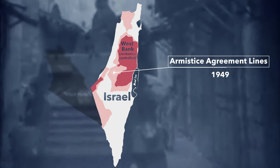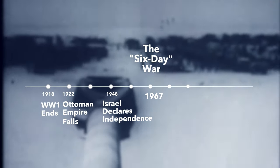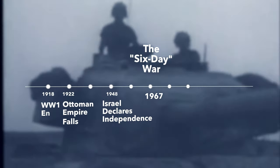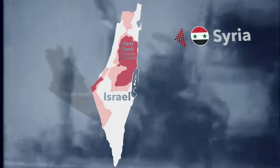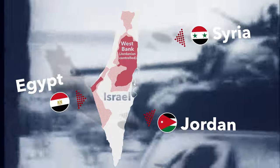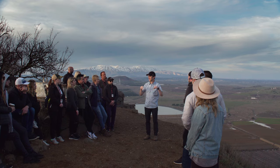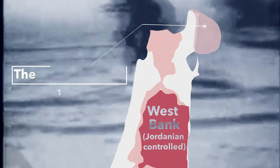Everybody lived within those boundaries for a while until 1967. 1967 arrives and there are rumors of war in the air again — Israelis being invaded by Syria, Egypt, and Jordan. The Six-Day War kicks off, and the Israelis in six days push them all back out and take control of this land that we're on right now: the Golan Heights.